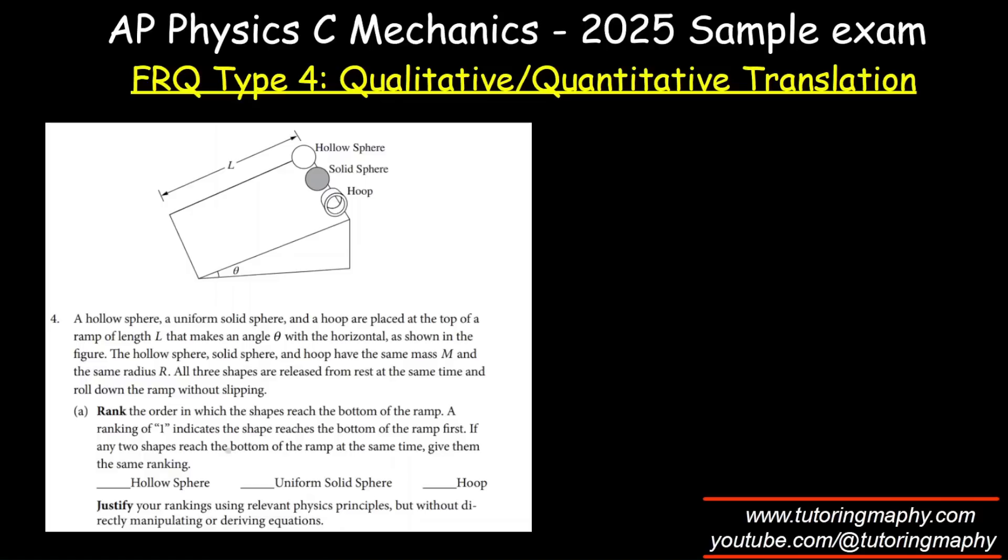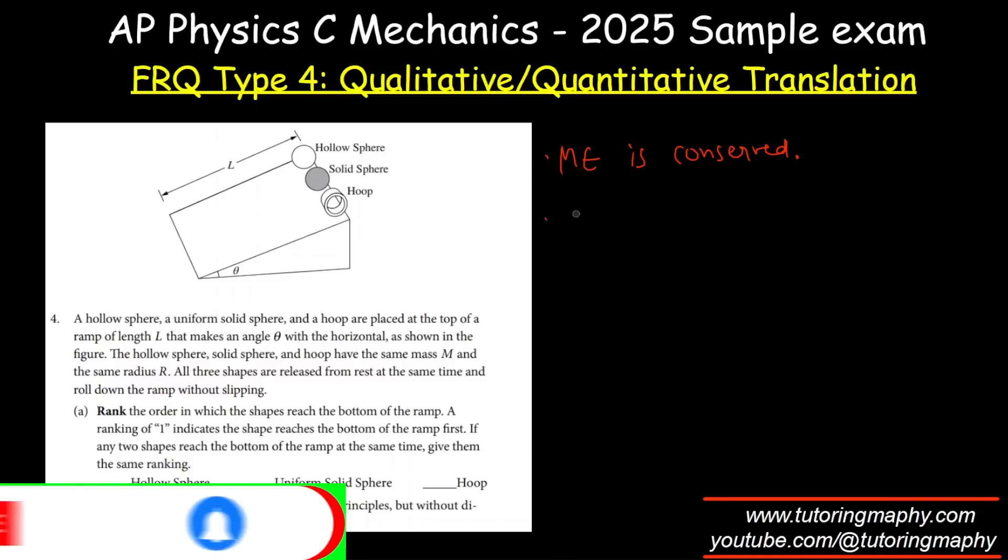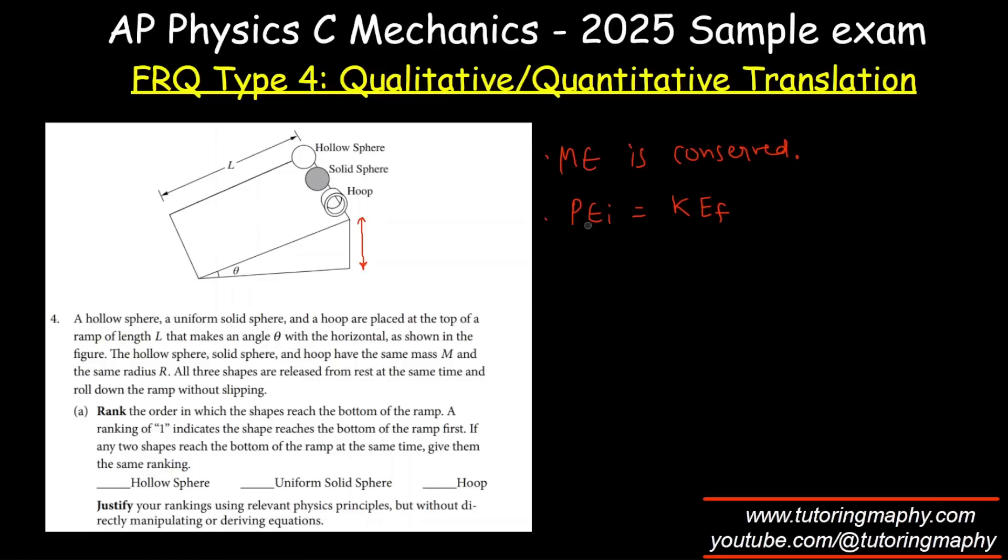By the way, we have to justify without directly using or manipulating equations. So we're going to say that since the mechanical energy is conserved, because even though there is no slipping and friction is acting, the friction will not do any work because there is no slipping. Which means that initial energy, which is only gravity MGH, so PE initial should be converted into KE final. Now initial potential energy is same for all of them, so final kinetic energy should also be same.